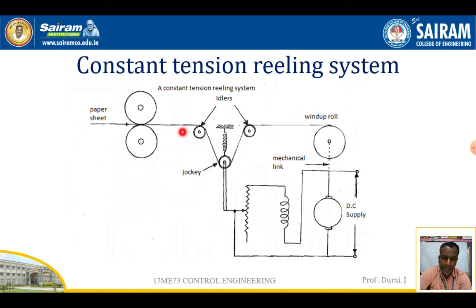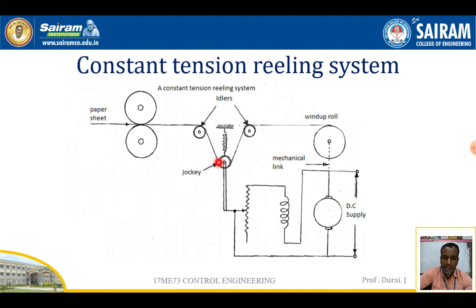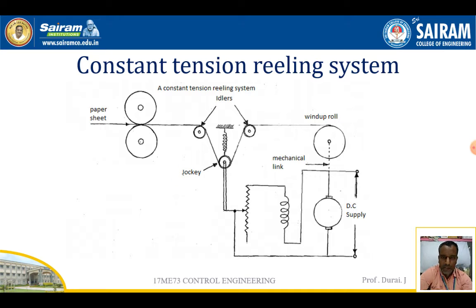To maintain constant tension, the jockey has to move in the up and down direction. As the paper comes out between the two rollers and passes via the idlers, any changes cause the jockey to move in the vertical direction. Moving upward increases the tension, and moving downward in the vertical direction decreases the tension. This is how the process is controlled.